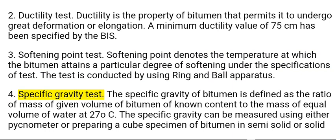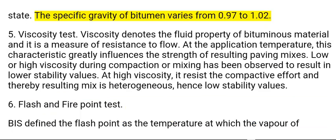4. Specific gravity test. The specific gravity of bitumen is defined as the ratio of mass of a given volume of bitumen to the mass of an equal volume of water at 27°C. The specific gravity can be measured using either a pycnometer or by preparing a cube specimen of bitumen in semi-solid or solid state. The specific gravity of bitumen varies from 0.97 to 1.02.